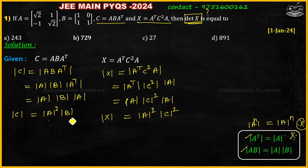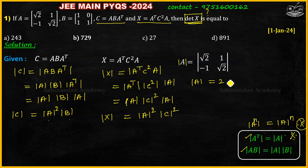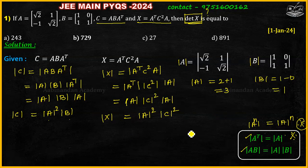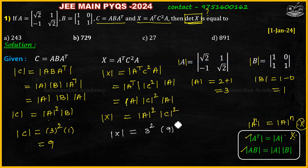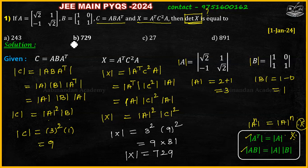Now find the values: determinant of A equals √2 times √2 plus 1, which equals 3. Determinant of B equals 1 minus 0, which equals 1. So determinant of C equals determinant of A squared times determinant of B, that is 3 squared times 1, equals 9. Therefore determinant of X equals determinant of A squared times determinant of C squared, which is 3 squared times 9 squared, equal to 9 into 81, which equals 729. That is option B.